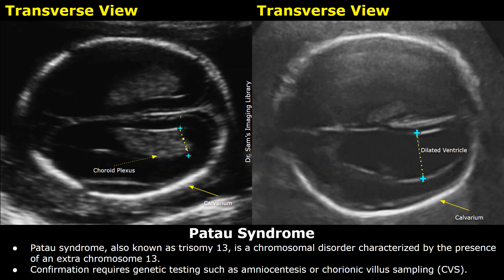Hello everyone, this is Dr. Sam and today you will learn about Patau Syndrome on Ultrasound. Patau Syndrome is also known as Trisomy 13. It is a chromosomal disorder characterized by the presence of an extra chromosome 13. Its confirmation requires genetic testing such as amniocentesis or chorionic villus sampling.